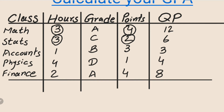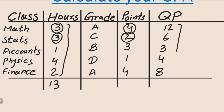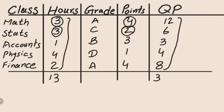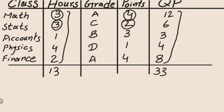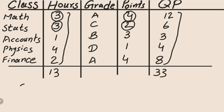Next we calculate the total credit hours, which comes to 13. Then we calculate the total quality points by adding them all up, and the answer is 33. To find the GPA, we divide the total quality points by the total credit hours.